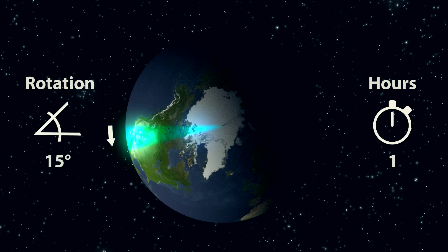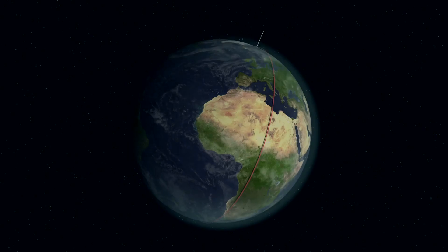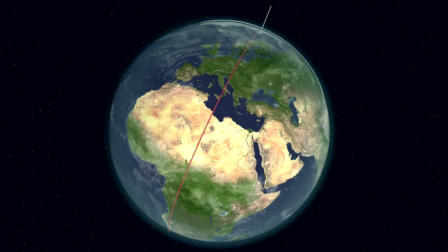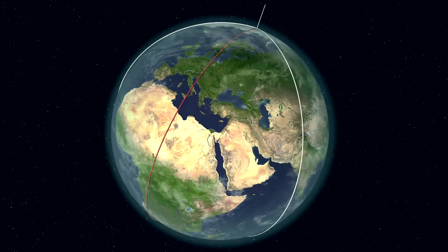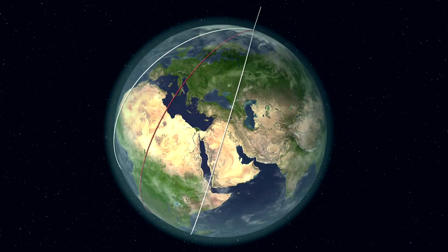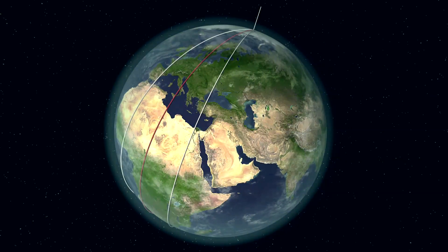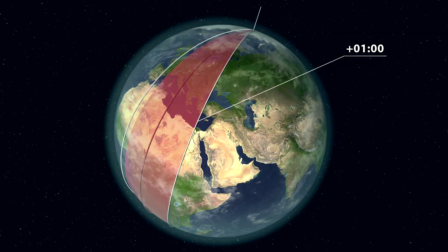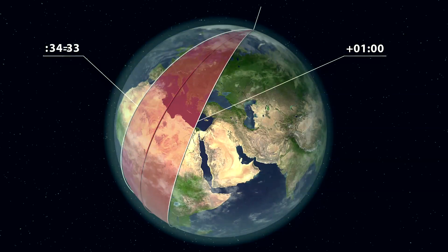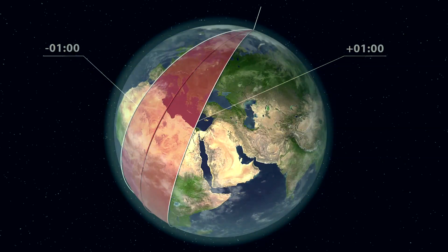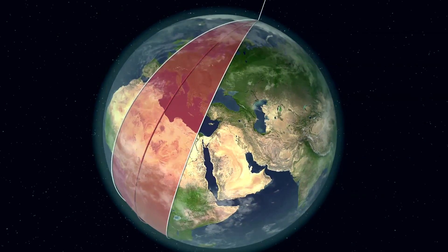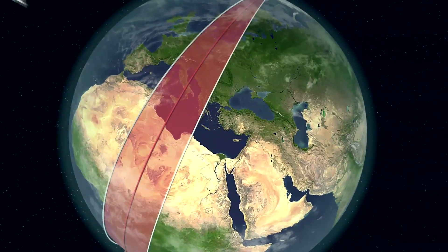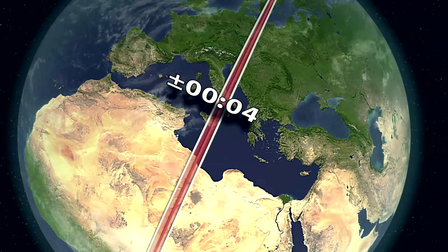Consequently, according to the Earth's west-east rotational direction, local time 15 degrees east of us is one extra hour, and one hour less 15 degrees to the west. The difference is 4 minutes per degree.